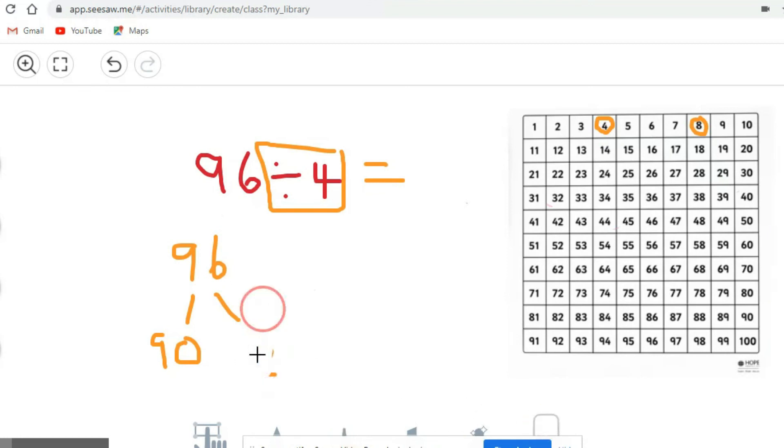So instead, what could I do? Let's try 80. So if I had 80, 80 and what? 16. Are both of those numbers in the 4 times table? Let's check. So if I know 4 times 10 is 40, I know that double 40 is 80. So how many 4s would be in 80? 20.